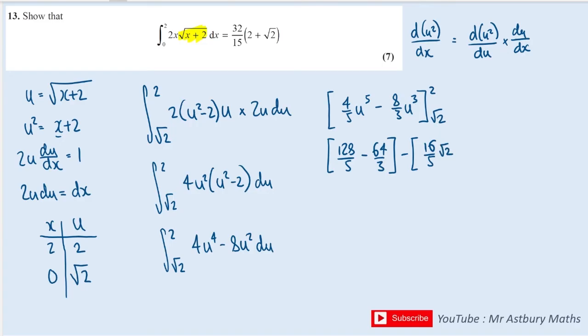Root 2 to the 3 is 2 root 2, times 8 is 16, over 3 this time, root 2. Evaluating each bracket separately, the first one is numerical and gives 64/15.